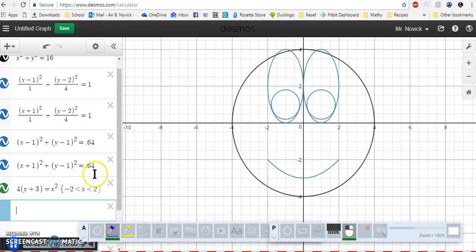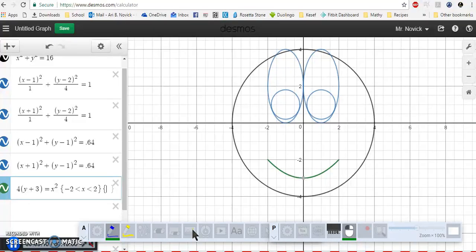I can even do both x and y restrictions—I just put one after the other. Let's say I want to make it kind of sideways. Actually, I only want the right half of it.